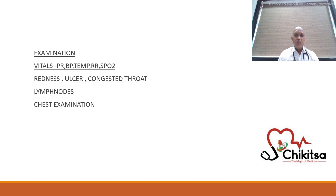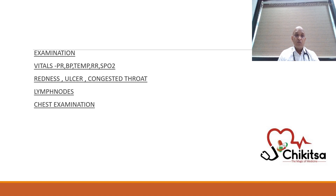On examination, you need to see if the pulse rate is going out of proportion to the temperature, if blood pressure is going low, if respiratory rate is going high, or if SpO2 is going low — then you may have to consider lower respiratory tract infection, because in URI these things usually will not happen. In the throat you will find a congested red throat; sometimes there can be ulcers or lymph nodes.